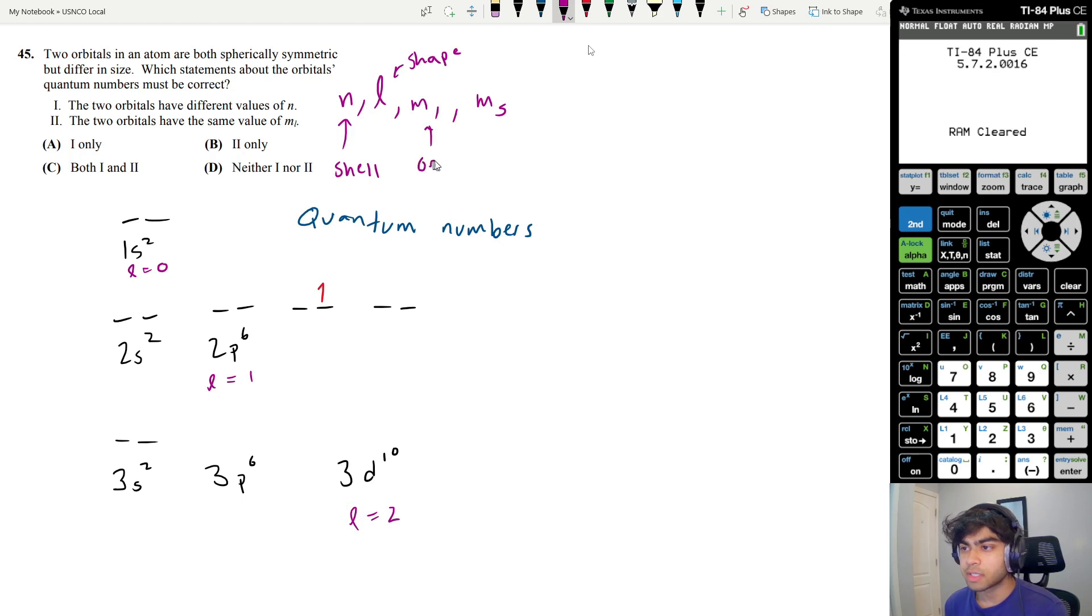ml is your orientation, talking about which subshell you are in. So s only has one subshell, so all of its ml values are going to be 0. But for p, ml at this first one is negative 1, ml here is 0, and then ml here is 1. It's symmetric. And then d goes the same way: it starts off at negative 2, negative 1, 0, plus 1, and plus 2. F is the same thing.